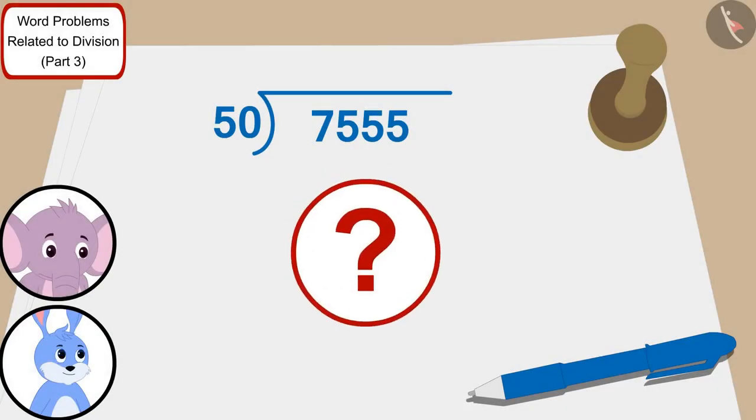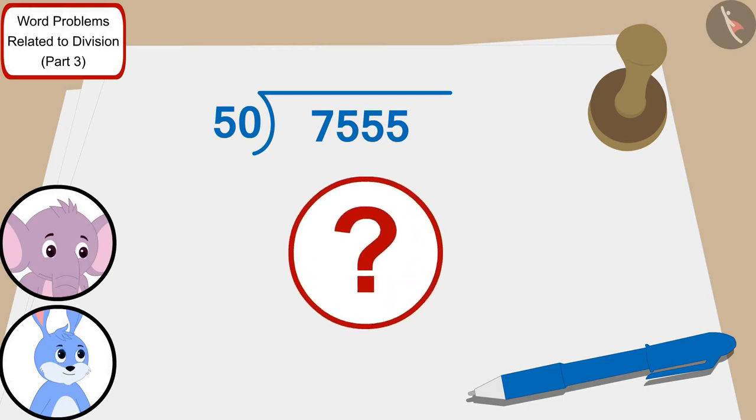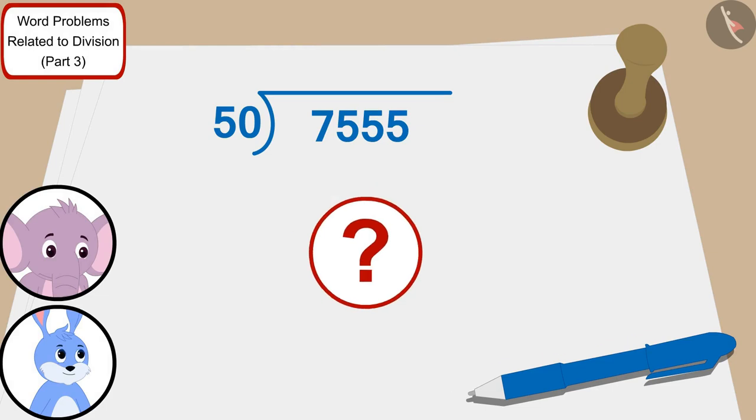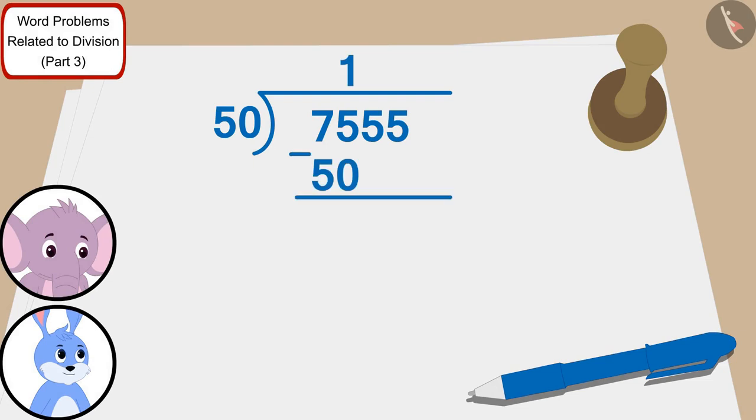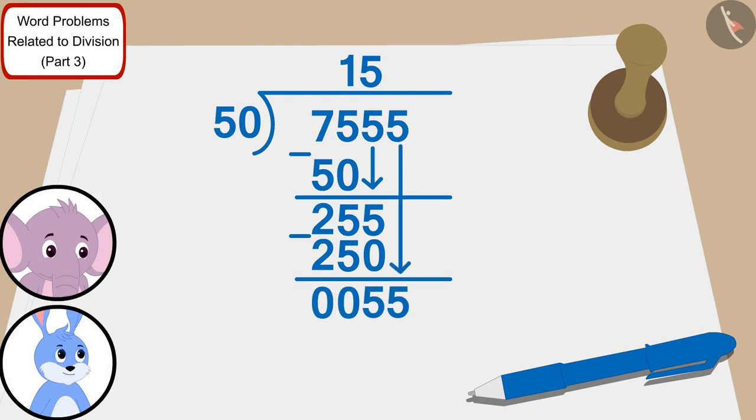Children, can you find the answer by using the process of division? If you wish to, you can solve it by pausing the video. We can divide 7555 by 50 in this way. Bunny and Appu will be able to distribute 50 rupees to 151 poor villagers.